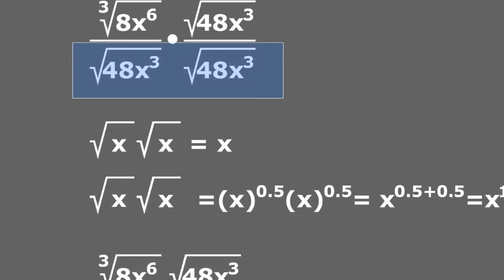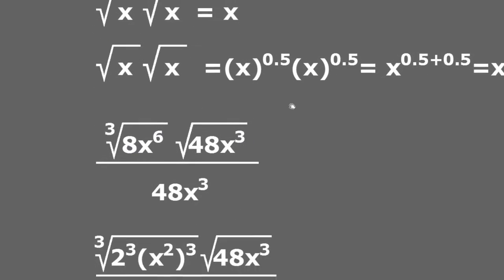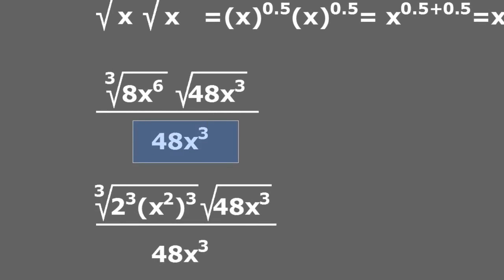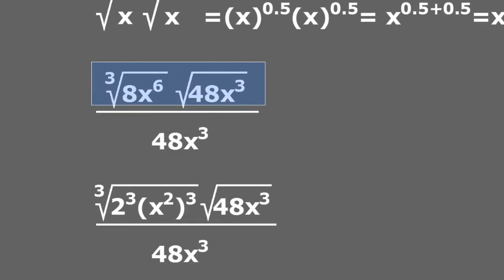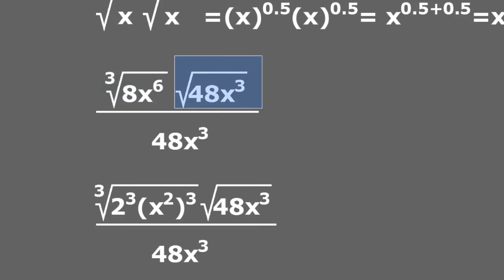We do this multiplication on the denominator and what we get is simply 48x cubed on the denominator. Now I must multiply the numerators, but before I do, I have a problem: one is a cube root and the other is a square root. So I cannot go straight into multiplication — I must try to simplify them first, because if I have a cube root and a square root, I cannot multiply them together.